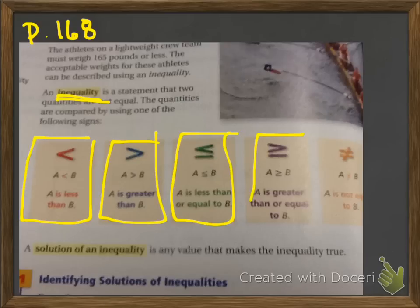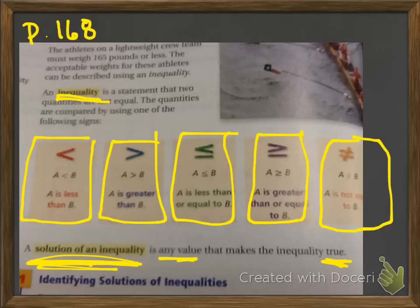You can find this on page 168, but I just took a picture. These are the different types of inequalities you can have. Less than, greater than, less than or equal to, greater than or equal to. And this symbol right here means not equal to.